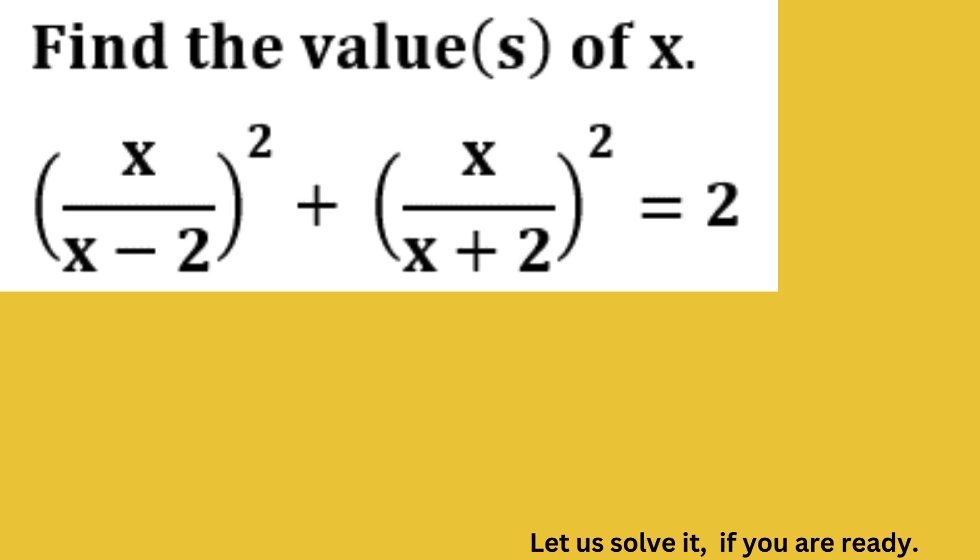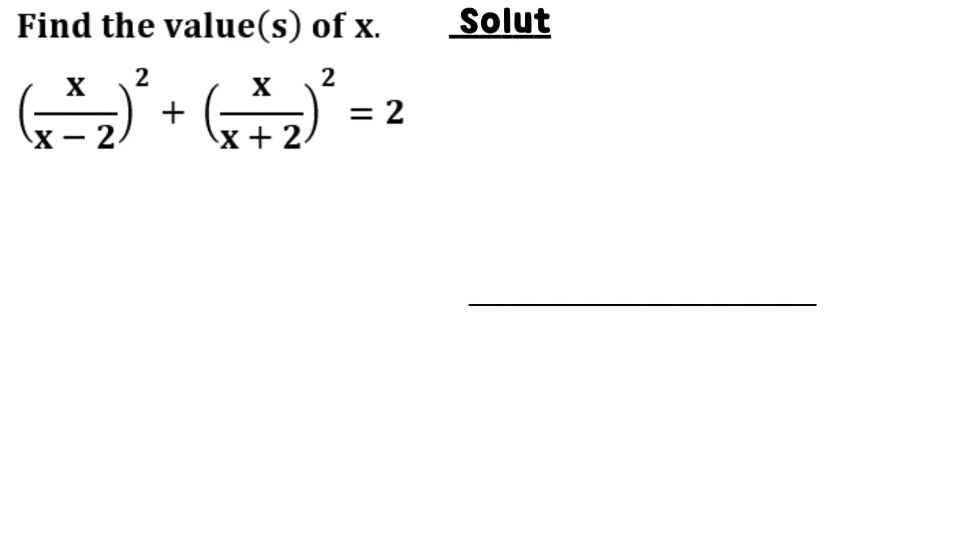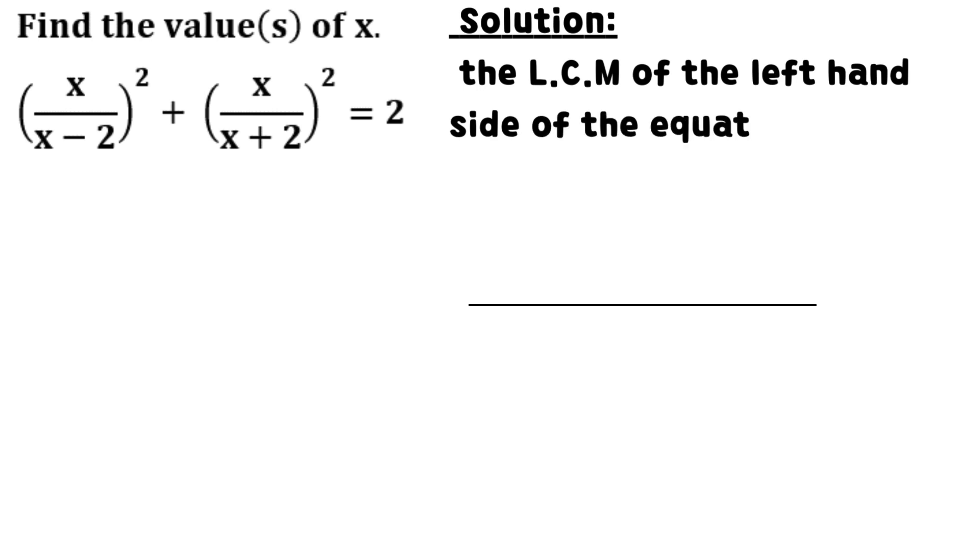Find the values of x in the given algebraic equation. The lowest common multiple of the left-hand side of the equation is the product of the square of x minus 2 and the square of x plus 2.